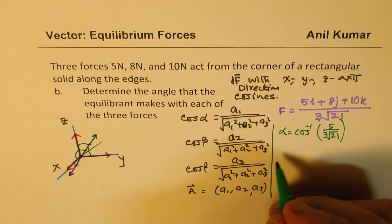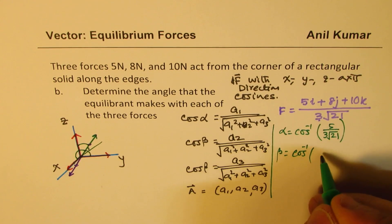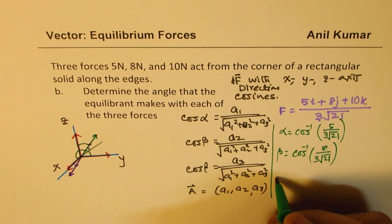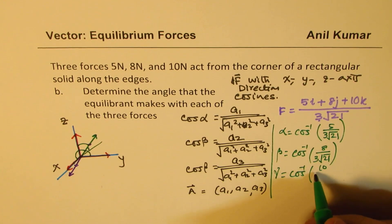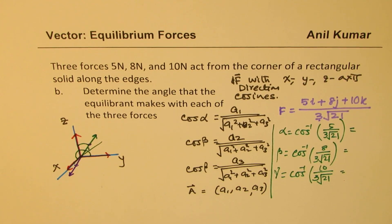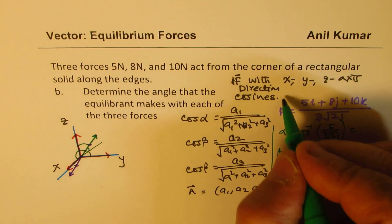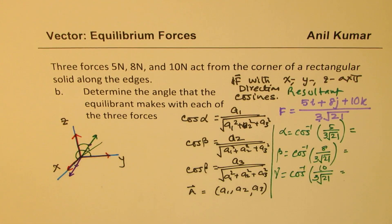And beta will be equals to cos inverse of 8 over 3 square root 21, and gamma will be cos inverse of 10 over 3 square root 21. Does it make sense to you? So we just need to calculate these values and that is why I'm working with force first. At times you may have to find the angle which the resultant makes. This is the resultant. Then we'll work with the equilibrant.